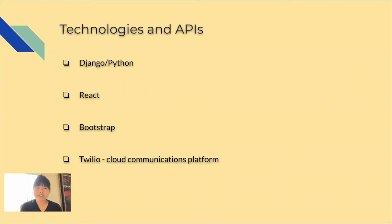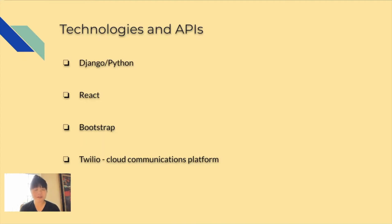Some technologies I used are Django Python for the back end, React for the front end, Bootstrap and some CSS for styling. I also used Twilio, which is a cloud-based communication platform that allows the business to send the customer a text notification telling them that their order status has changed. I can show how this is used later in the application.